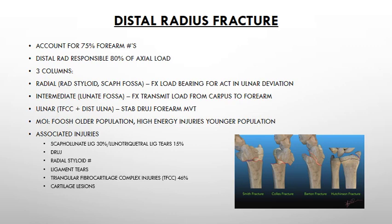The distal radius is responsible for 80% of the axial load through the arm. Looking at the osteokinematics, there are three columns: the radial column, the intermediate, and the ulnar column. The radial column is made up of the radial styloid and the scaphoid fossa where the scaphoid articulates. The intermediate column is where the lunate sits. On the ulnar side, the ulnar column of the radius is where your TFCC and your distal ulnar articulates.